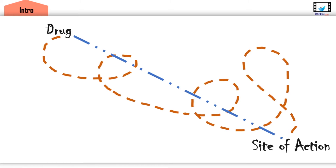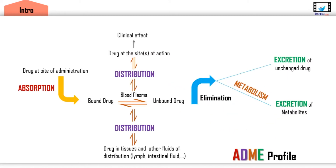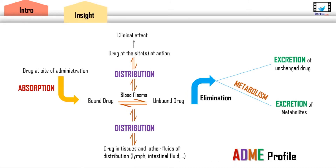So let me track with you the journey of the drug substance via this simple scheme. Drugs come in different dosage forms and are taken via various routes of administration. In order for the drug to get from the administration site to the bloodstream, it has to be liberated from the dosage form and cross many membranes.